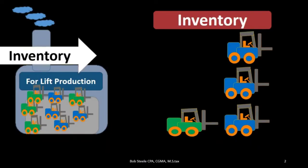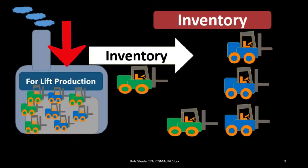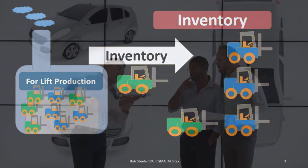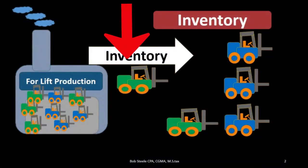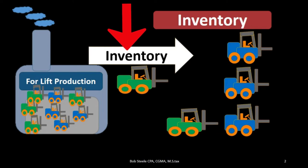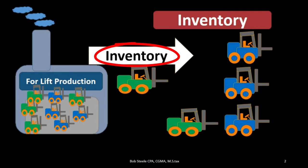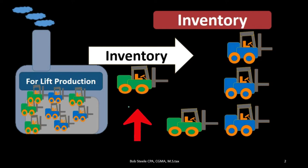In our example we're going to be purchasing and selling forklifts — meaning we're going to purchase forklifts from the factory and then sell those forklifts. That means forklifts to us will be inventory, because we are purchasing them in order to resell them for the generation of revenue. That's really the definition of inventory: purchasing something for resale, as opposed to purchasing a forklift to help generate revenue through its use, in which case it would be property, plant, and equipment.